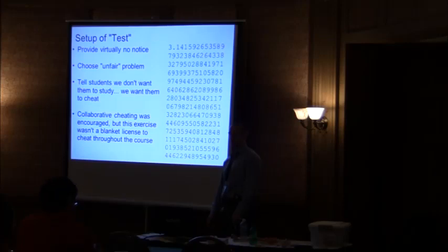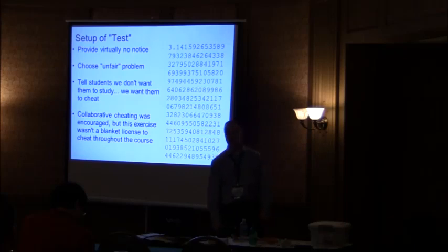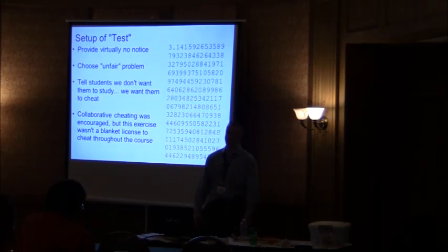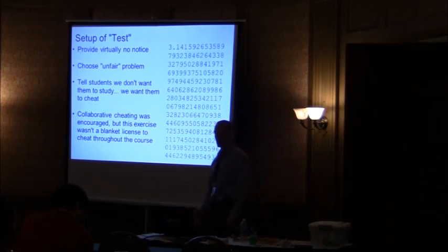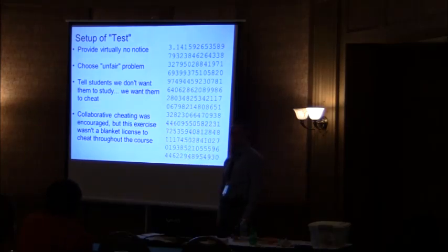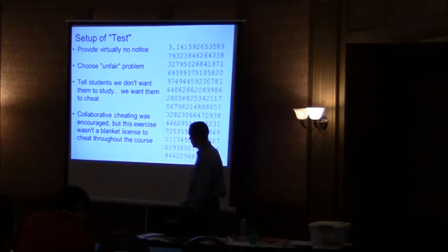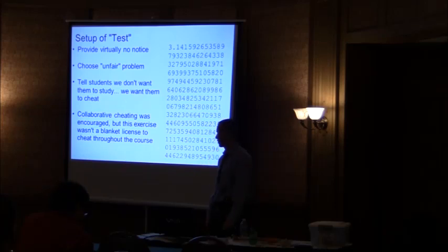So here's what the test was. Basically provide virtually no notice. So we'd tell them on a Friday afternoon before they go home for the weekend that they're going to have a test Monday morning. What's the test going to be? They've got to memorize pi to 100 digits. Now, I'm sure there's some of you 50-pound brain types out there that may have done this, but all of our students had not, and we're probably not going to be able to do it over the weekend. So we would tell them, though, we don't want you to study. We want you to cheat. However, you can't get caught. You get caught, you fail. So collaborative cheating was encouraged, but again, this exercise was a blanket license to cheat throughout the course just for this particular exercise.